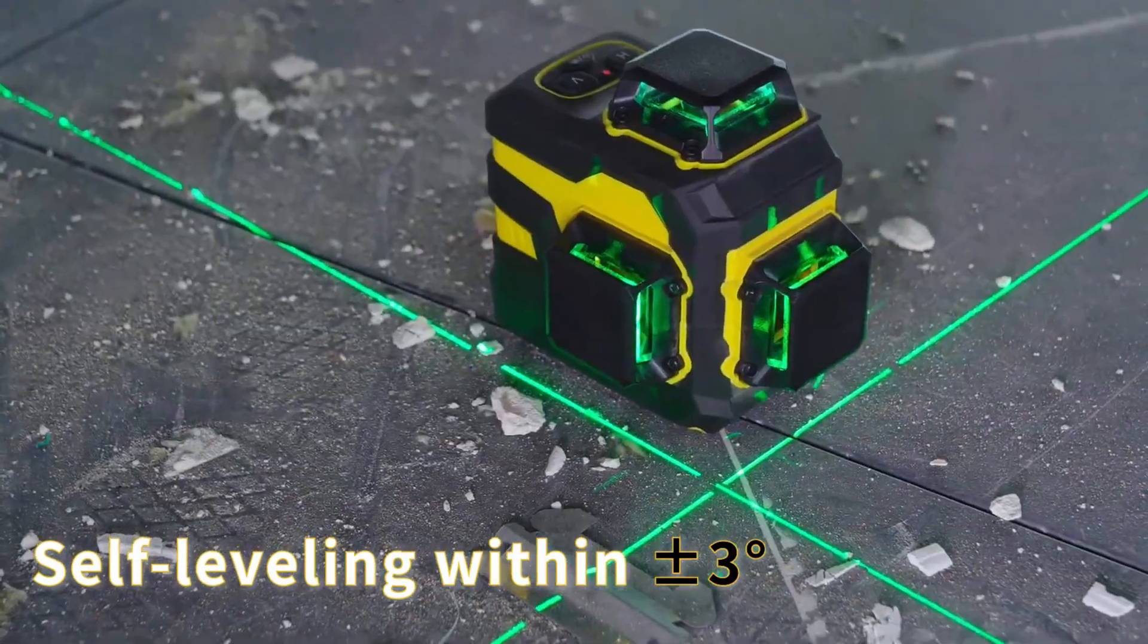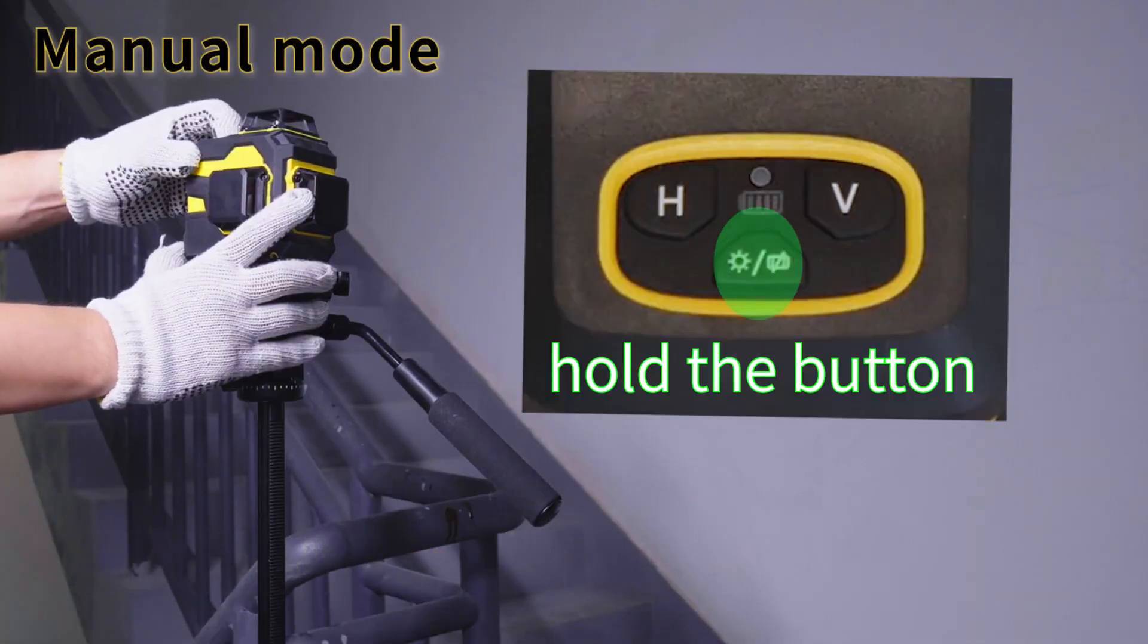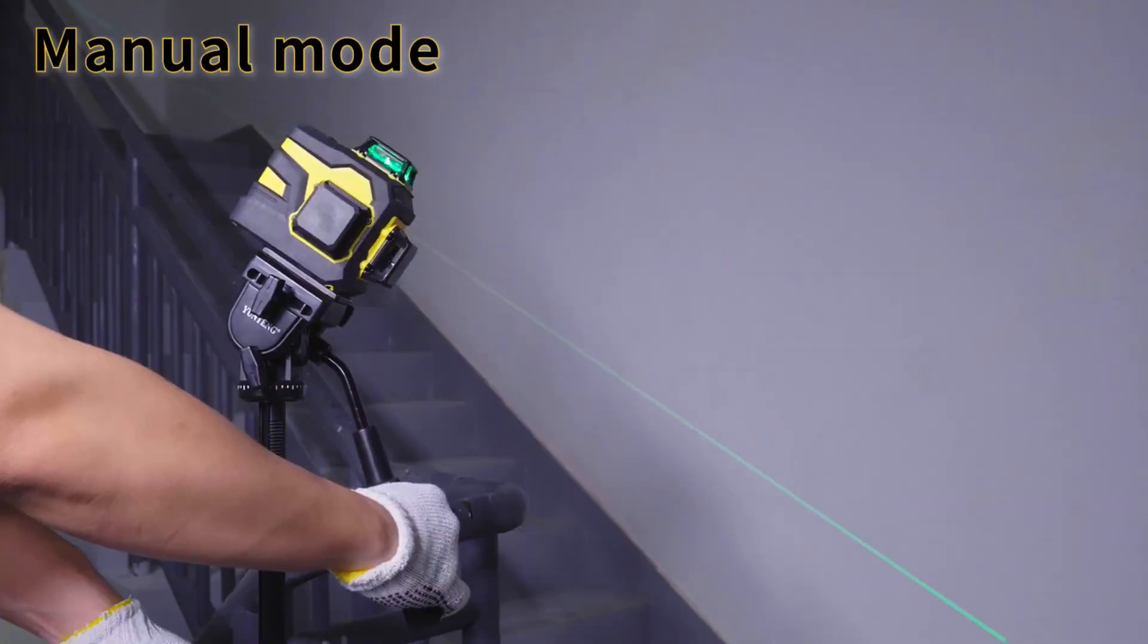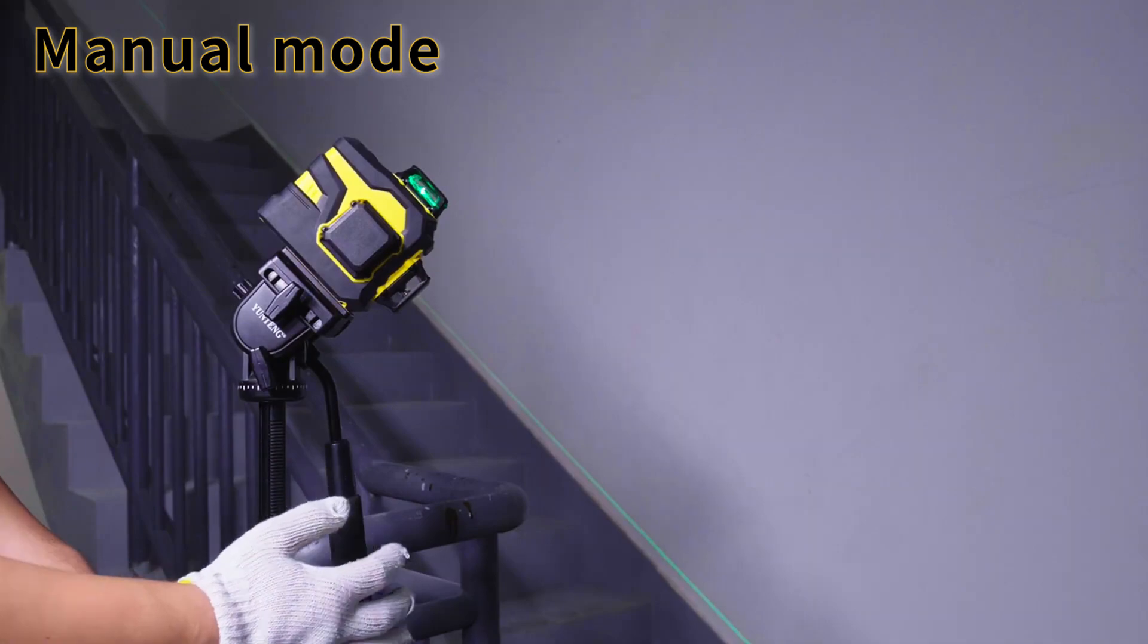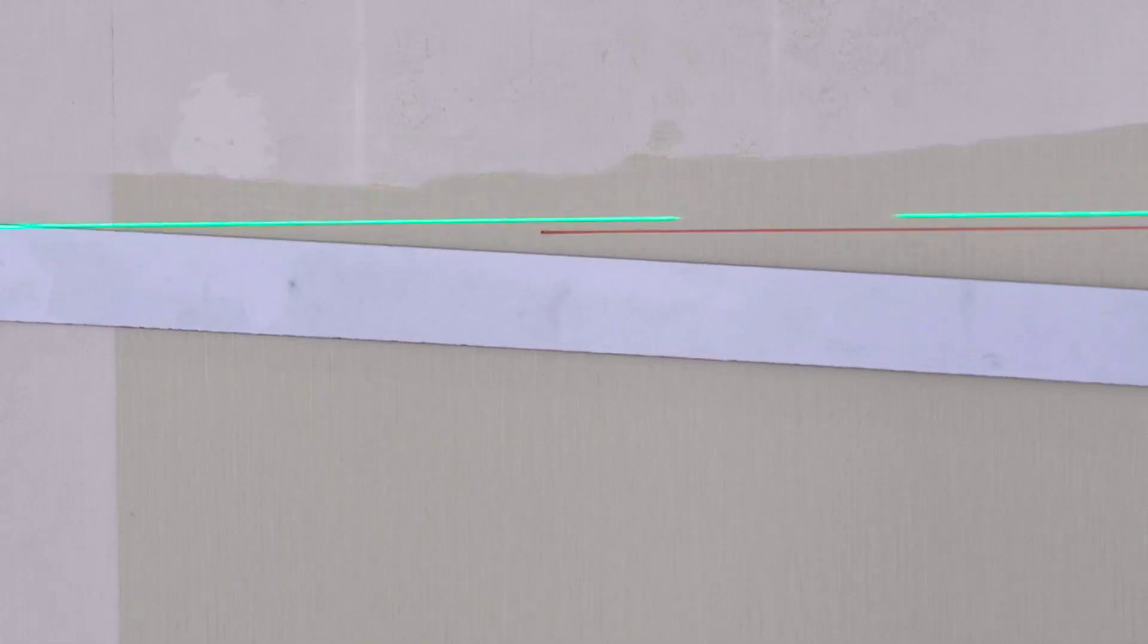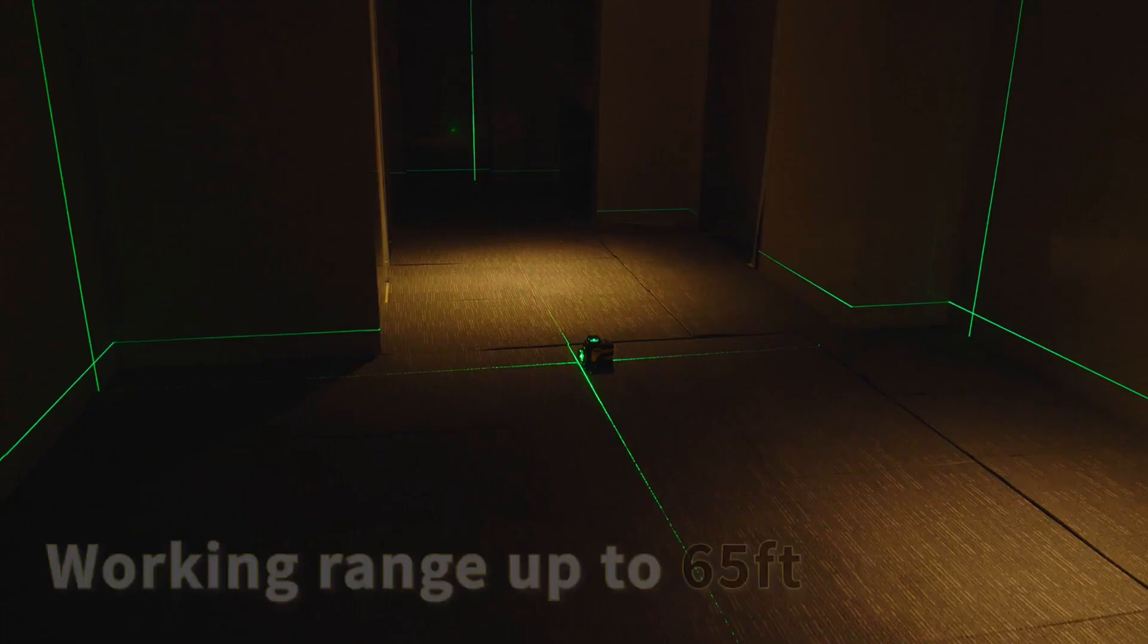The line laser is equipped with a large capacity battery, which can work up to 8 hours. When the battery power is low, the battery indicator will turn from green to red. ECOVUK also comes with charger - charger indicator on red means charging, charger indicator on green means charging completed.